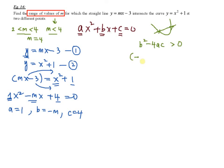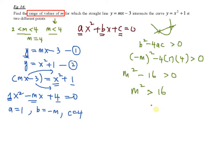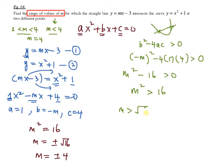Substitute into b squared minus 4ac greater than 0. You get negative m squared minus 4 times 1 times 4 greater than 0, which simplifies to m squared minus 16 greater than 0, then m squared greater than 16. Since this is an inequality, m is greater than positive square root of 16 or m is less than negative square root of 16. Therefore, the final answer is m greater than 4 or m less than negative 4.